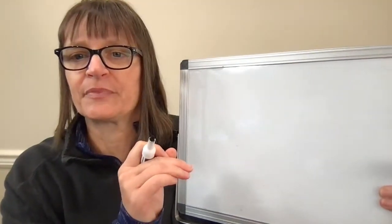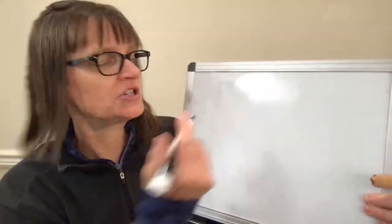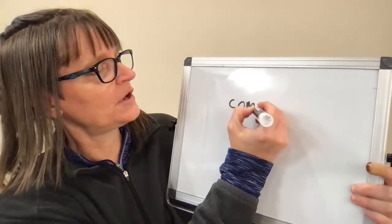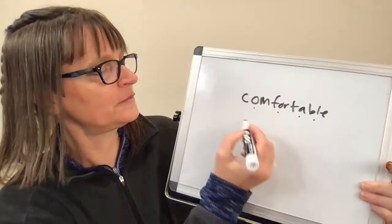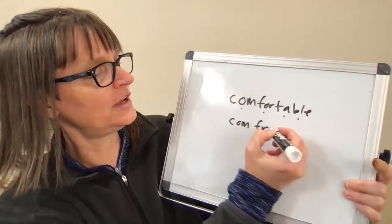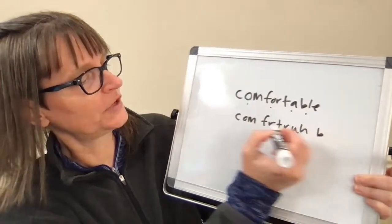We have a request about the word 'comfortable.' This viewer is saying that Google said it was like 'com-fa-trable,' but they don't hear that. I do have a video for 'comfortable' — after class I'll put links in the comments. But Dana is correct that we often don't really say 'com-for-ta-ble' with four syllables. We often change it to more like 'com-f-tra-ble,' 'com-f-tra-ble.'